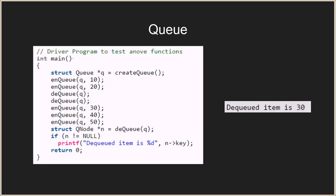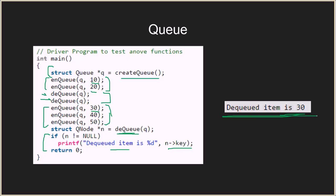In the driver method, we first create a queue using createQ. We then enqueue 10 and 20, and perform two dequeue operations, removing both 10 and 20. Next, we enqueue 30, 40, and 50, and then perform another dequeue. Since 10 and 20 were already removed, the first element now is 30 — so the dequeued element is 30, which matches the output.